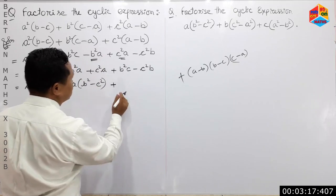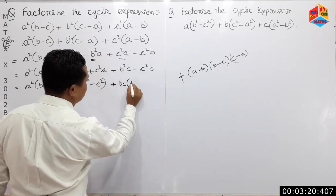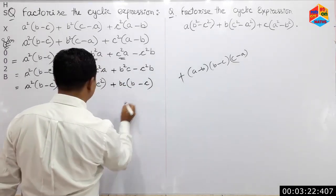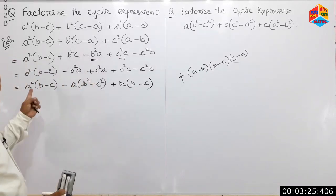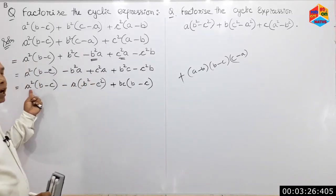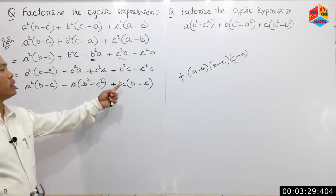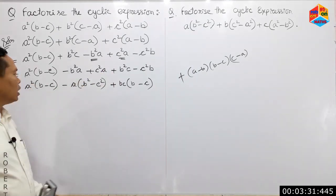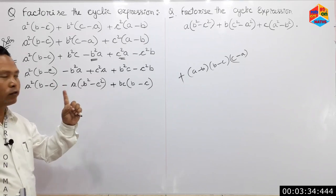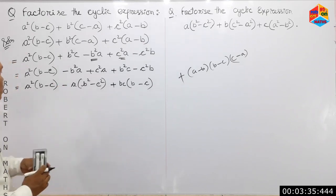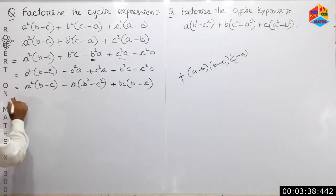Plus c equals bc equals b minus c equals 1. This is the descending power of a: a-squared, a, a-to-the-zero.